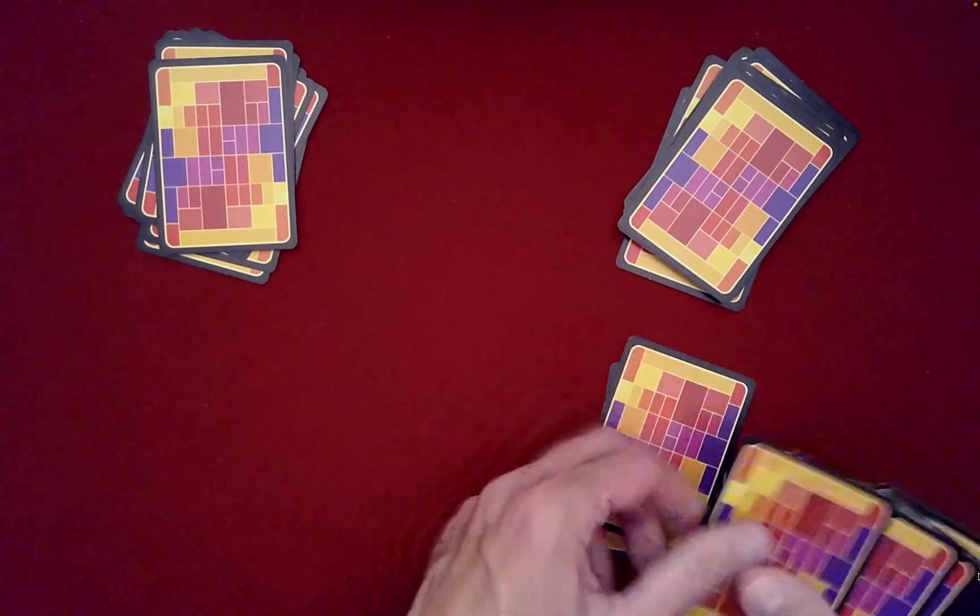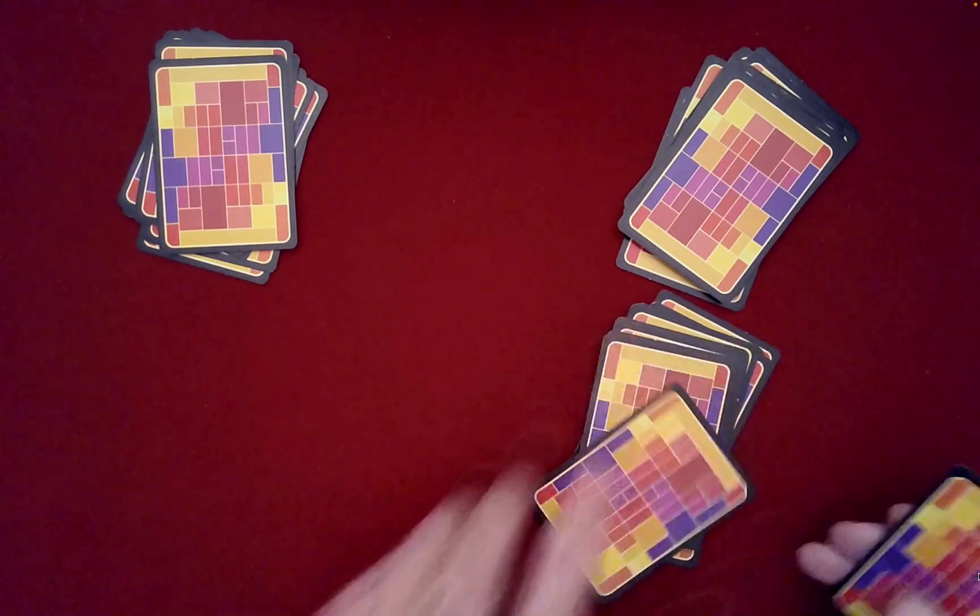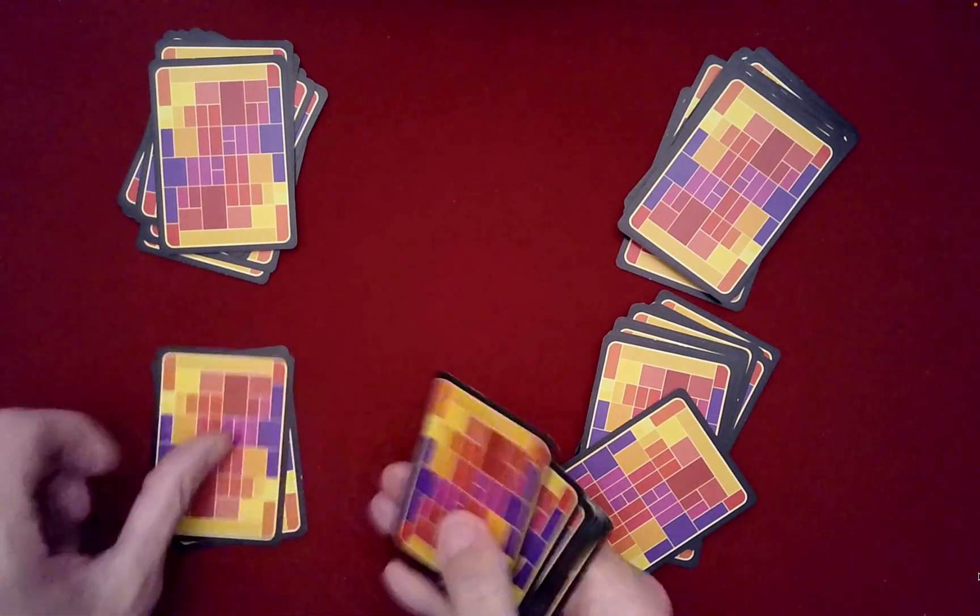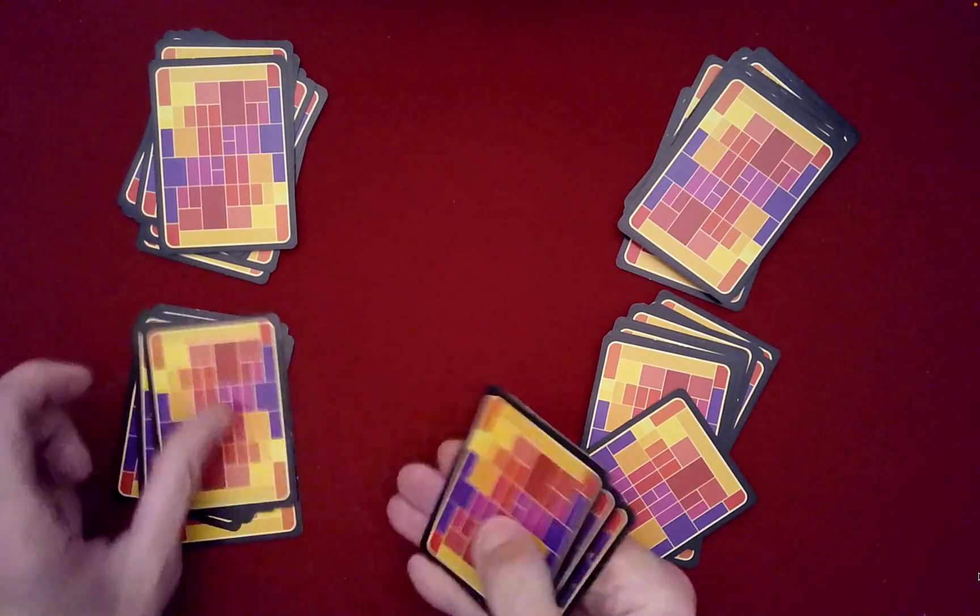How about now? 16 again? Okay, 1, 2, 3, 4, 5, 6, 7, 8, 9, 10, 11, 12, 13, 14, 15, 16. And then we need another group of eight. 1, 2, 3, 4, 5, 6, 7, 8.